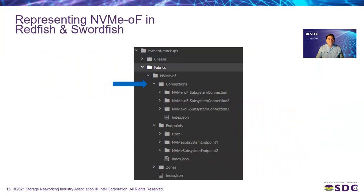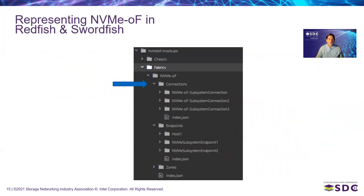Next, let's talk about provisioning connections. Here's an example of providing unrestricted read-write access to a particular subsystem and all its volumes — unrestricted to any particular initiator and any particular target endpoint. This means any host that can find this NVMe over Fabrics subsystem is allowed to access it over any of the fabric paths configured. The empty list of initiators and endpoints is unnecessary if you're not restricting to a particular list, but it's perfectly valid syntax shown here for illustration.